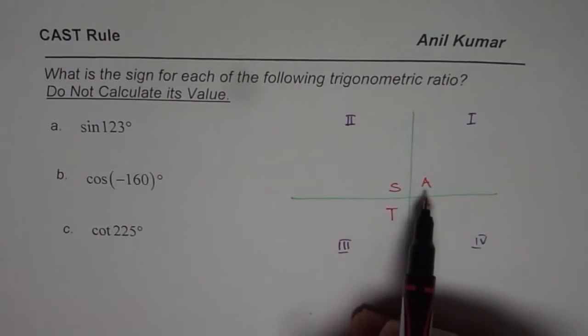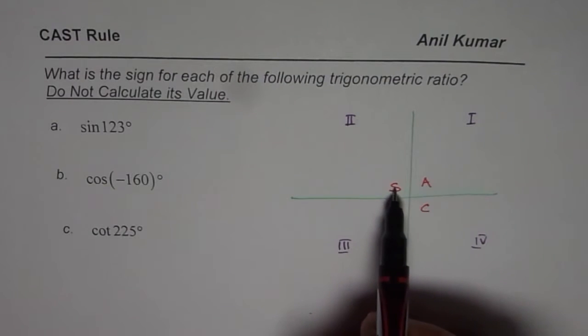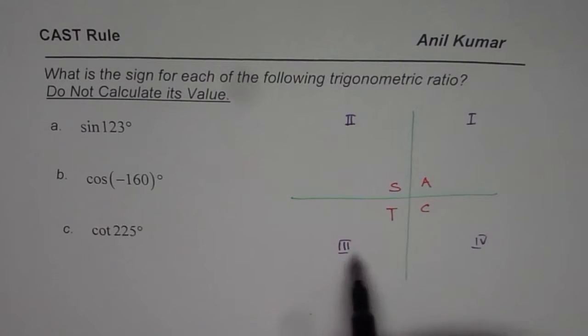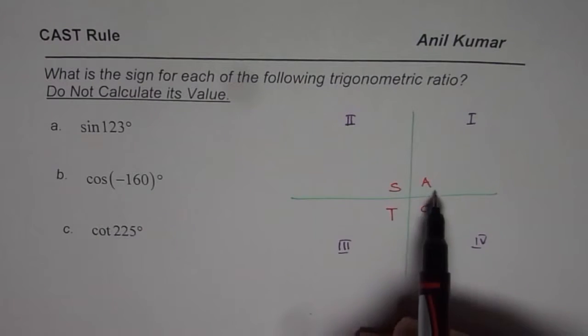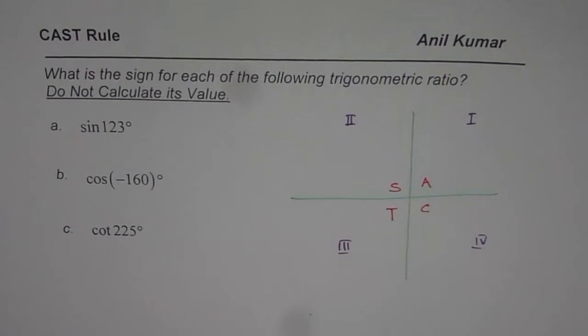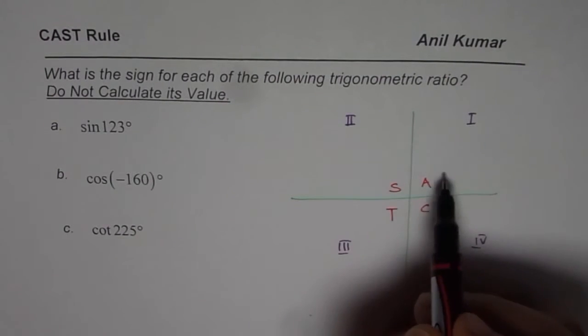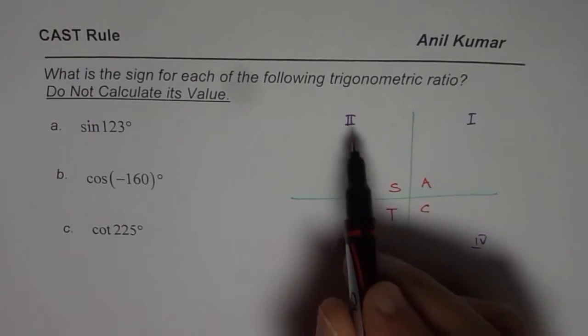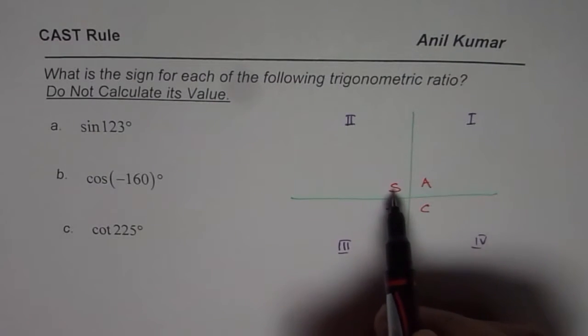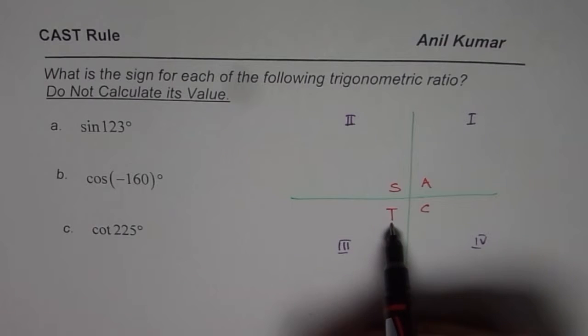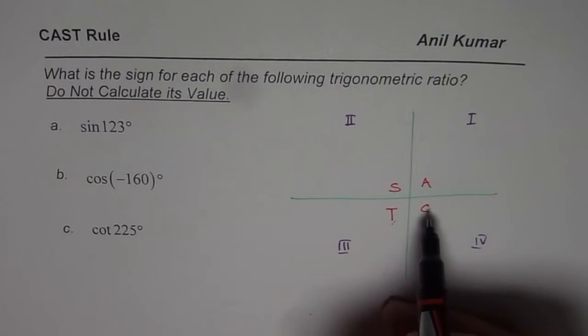Well some of us remember it as all students take calculus or all silver tea cup. So there are so many different ways to remember in which quadrant each one of the trigonometric ratios is positive or negative. So in quadrant 1, all are positive. In quadrant 2, sine is positive. In 3, only tangent or reciprocal cotangent will be positive. In 4, cosine and its reciprocal secant will be positive.